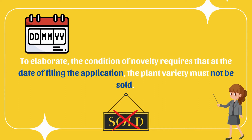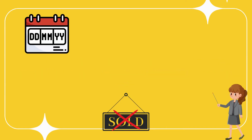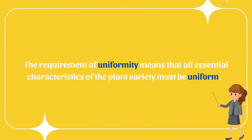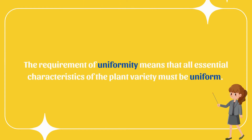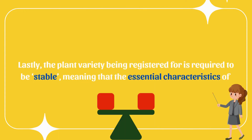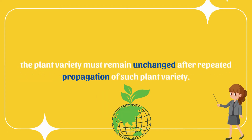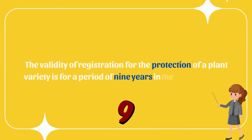A new plant variety is registrable if it satisfies the conditions of novelty, distinctiveness, uniformity, and stability. The condition of novelty requires that at the date of filing the application the plant variety must not have been sold. Distinctiveness requires at least one distinguishing factor from all other existing and protected plant varieties. Uniformity means that all essential characteristics of the plant variety must be uniform. Stability means the essential characteristics must remain unchanged after repeated propagation.